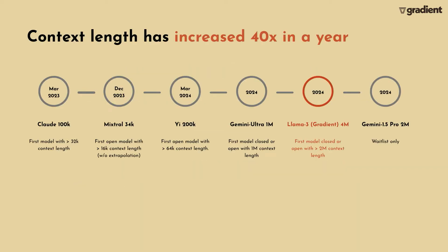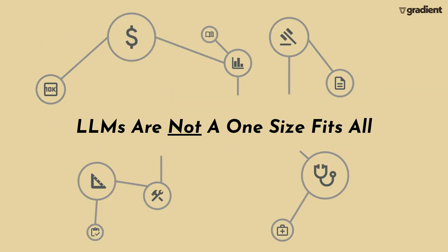Another related observation is that the context length — the number of tokens that you can fit into a prompt — has increased quite a bit over the past year. The largest context length models about a year ago were something like 100k, and in the past year they've grown to about 40 times that, just in models released in the past few months, including one released by Gradient. Both of these observations point to one key idea: large language models are not one size fits all. Taking a generalist base model off the shelf isn't really going to get you too far for more complicated use cases.